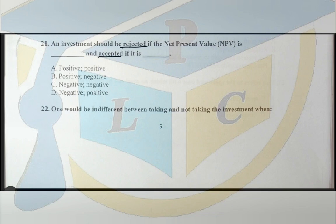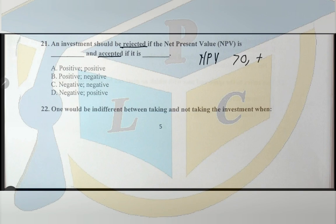When a business wants to undertake an investment and find the returns and the cost, NPV is one of the methods used to do the calculations and arrive at a decision. The decision rule for net present value states that an investment should be accepted if the outcome is greater than zero, or positive, but rejected if it is less than zero, or negative.